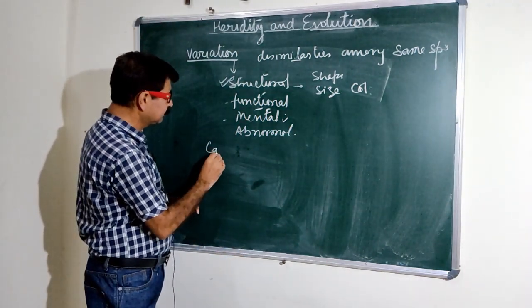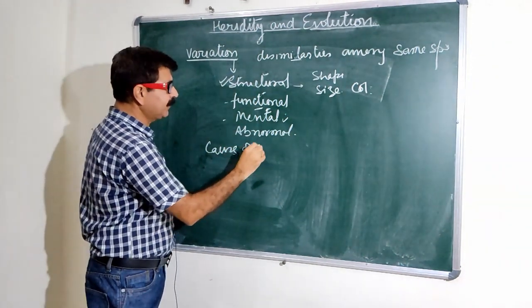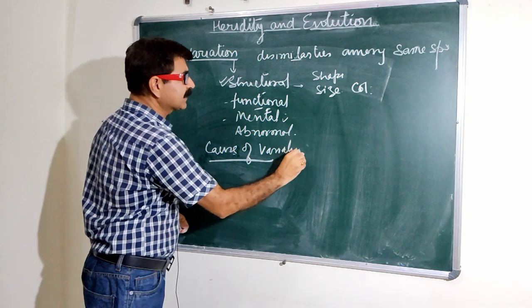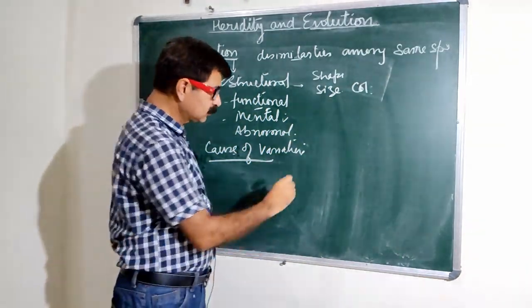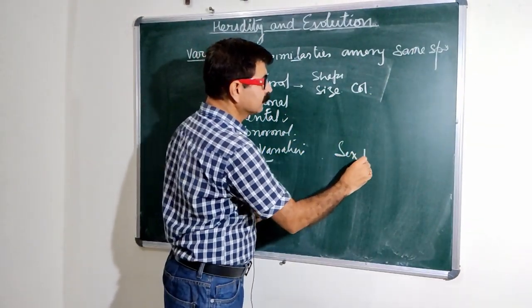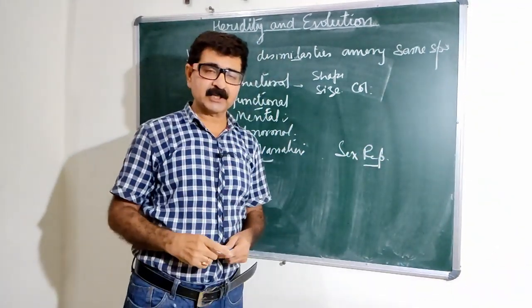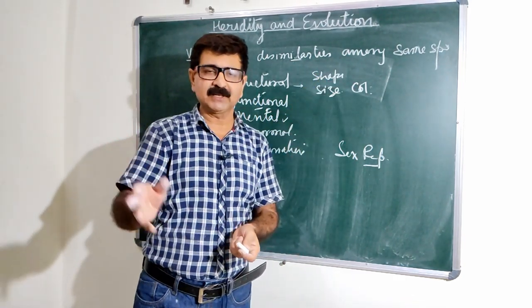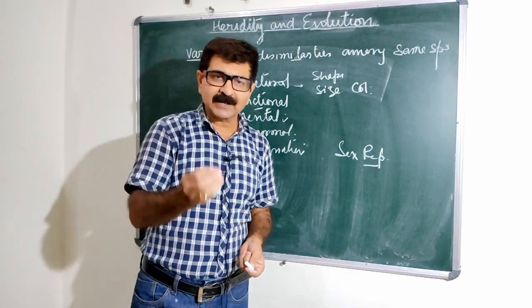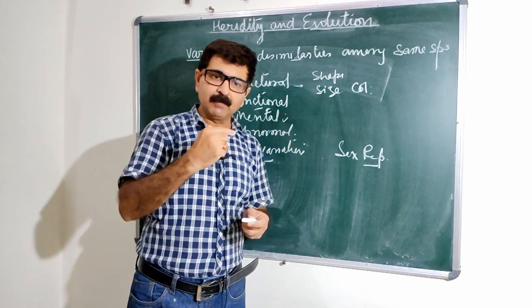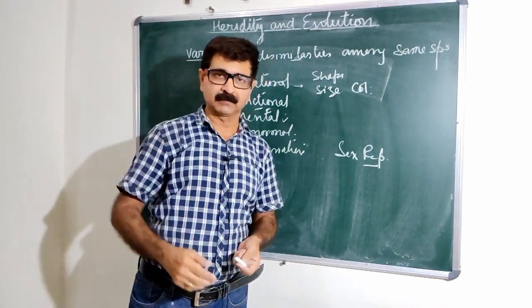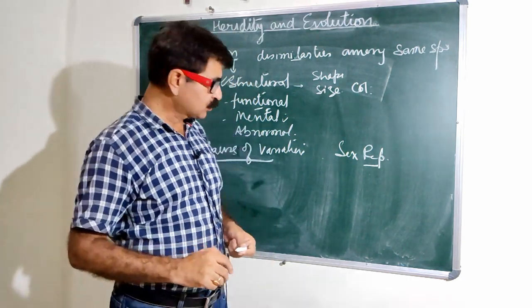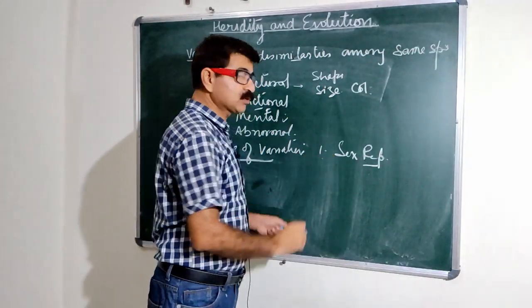Now let's talk about the causes of variations. The first cause is sexual reproduction. As sexual reproduction takes place, individuals have half a set of chromosomes from the mother and half from the father. That is why those individuals neither completely resemble the father nor the mother — they have variations.